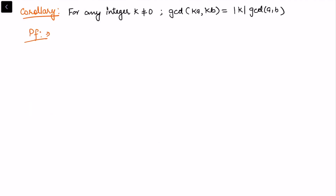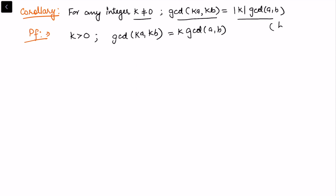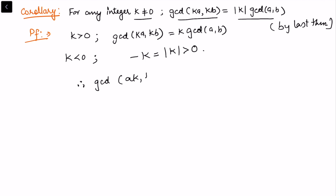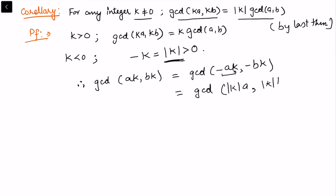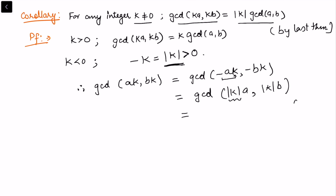Now let us prove the corollary. For k not equal to 0, we want to show gcd(ka, kb) = |k|·gcd(a, b). From the previous theorem, when k is positive we already have gcd(ka, kb) = k·gcd(a, b), so it is sufficient to consider when k is negative. When k is negative, −k = |k|, which is strictly positive. So gcd(ak, bk) = gcd(−ak, −bk) = gcd(|k|·a, |k|·b). Since |k| is strictly positive, we apply the theorem: |k| comes out and we have |k|·gcd(a, b), proving the corollary.